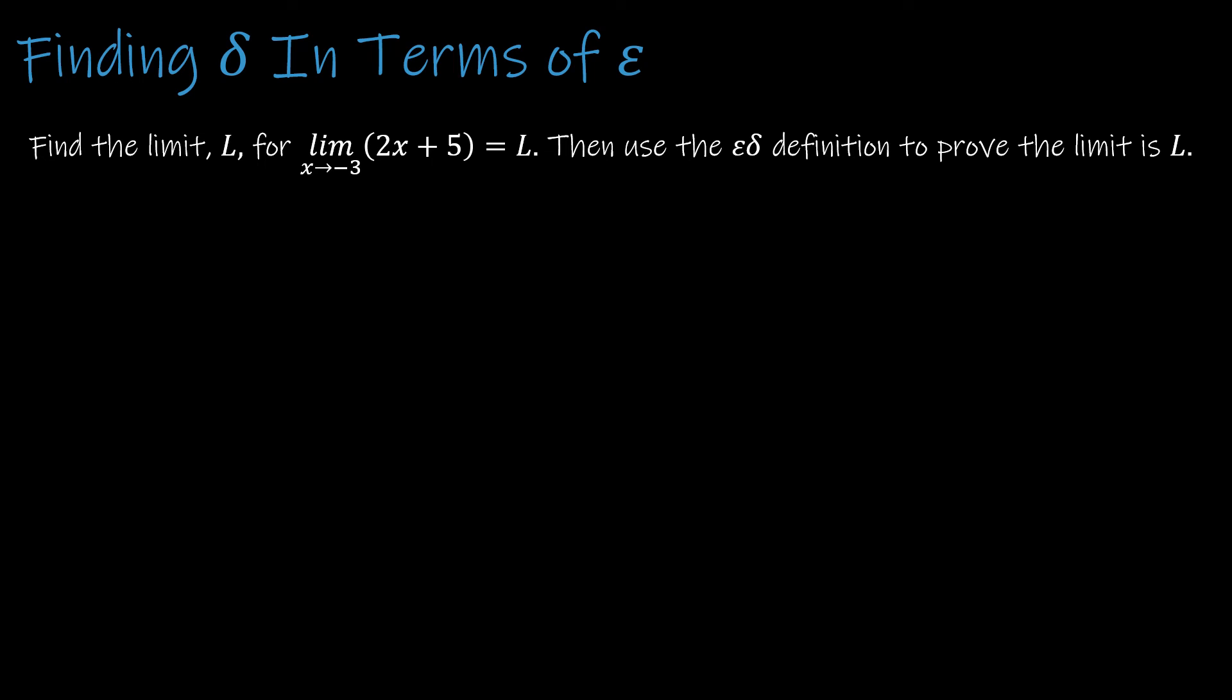Here's one last example to go through. So feel free to press pause and try this question on your own. If you're not quite ready for that, just hang tight and we'll go through it together. So this one, we're actually asked to find the limit ourselves first and then use the epsilon delta definition to prove the limit is whatever we find it to be. So first part, super duper easy. We know how to find the limit. As x approaches negative 3, I can use direct substitution. 2 times negative 3 plus 5. So I'm going to write the limit as x approaches negative 3. I'm just going to call it f(x) is equal to 2 times negative 3 plus 5, which is of course negative 6 plus 5 or negative 1. So negative 1 is going to be equal to L.